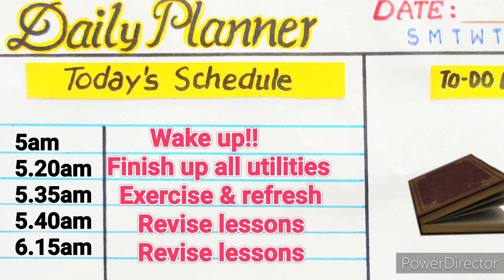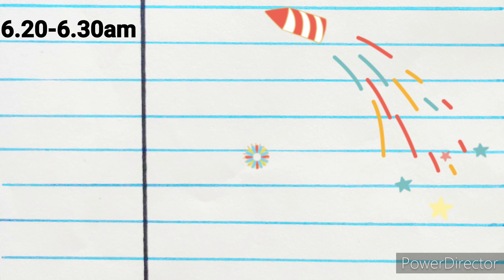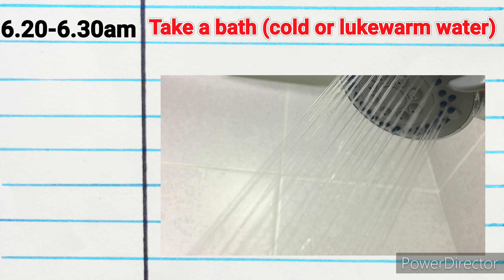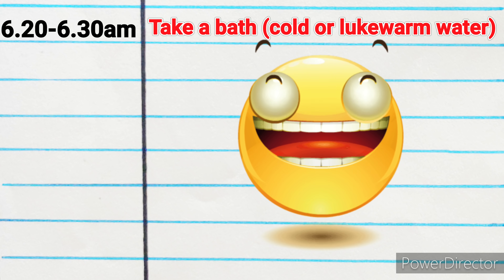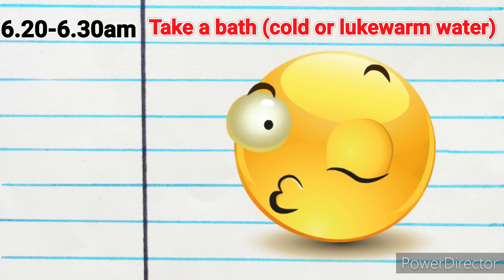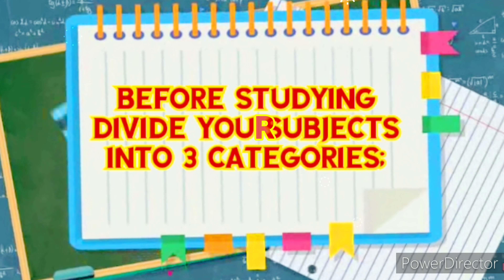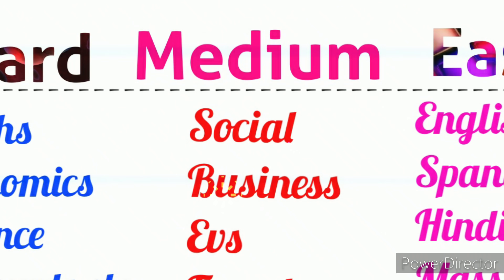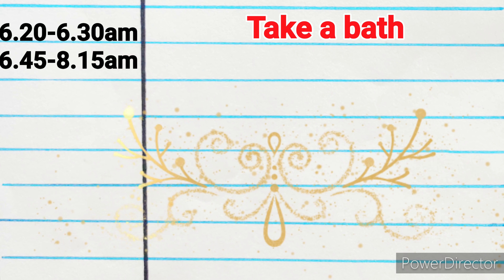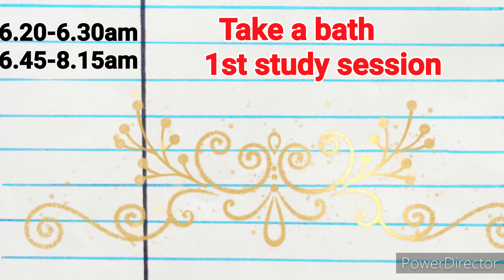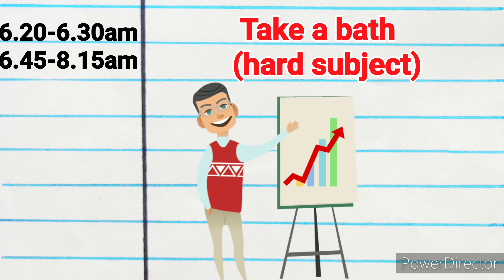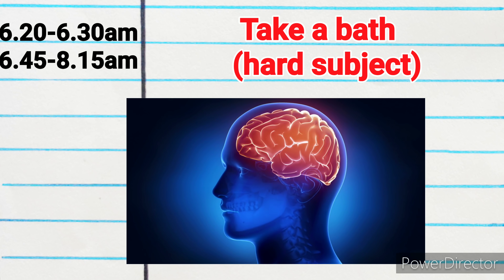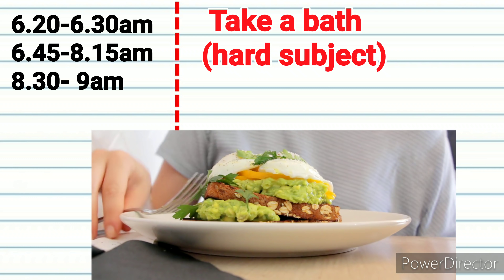5:40 AM to 6:15 AM: revise everything that you studied the last night. 6:20 AM to 6:30 AM: take a shower in cold water or lukewarm water to keep yourself fresh and active throughout the day. Before studying, divide your subjects into three categories — hard, medium, and easy. 6:45 AM to 8:15 AM is your first study session: learn the most difficult topic or subject, as this is the time your brain is freshest.